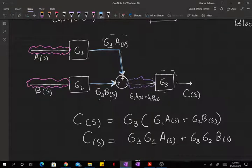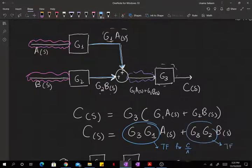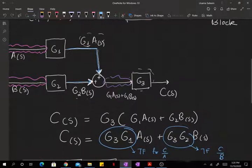And here, g3 times g1 is the transfer function for c over a, whereas g3 times g2 is the transfer function for c over b. So now I know how c is going to respond to either changes in a or changes in b once I have these transfer functions.